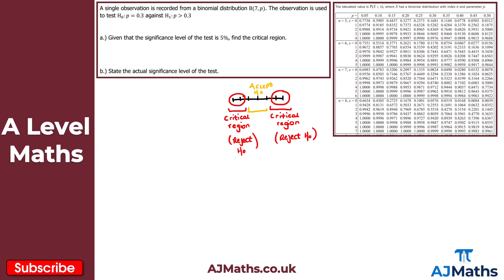All we're doing is finding these regions, taking the observed value, and deciding whether we accept or reject H0. If it falls within the critical region, we reject H0; if it falls within the acceptance region, we accept H0. The critical value is simply the first value to fall within the critical region.